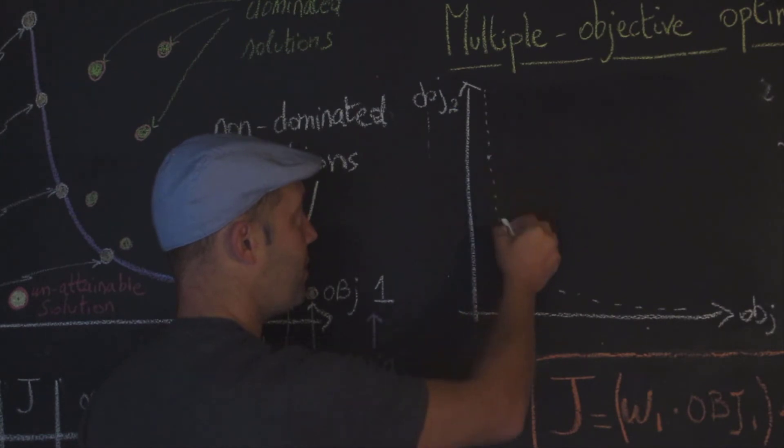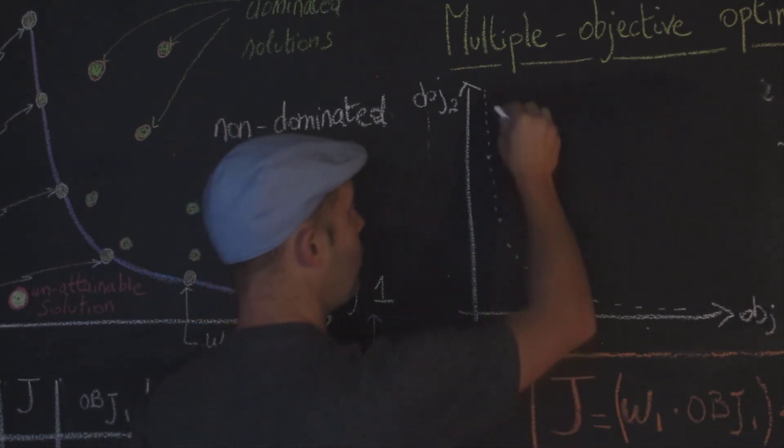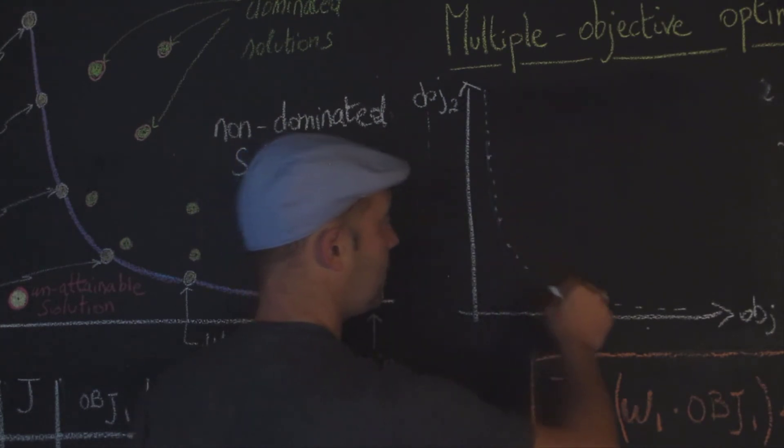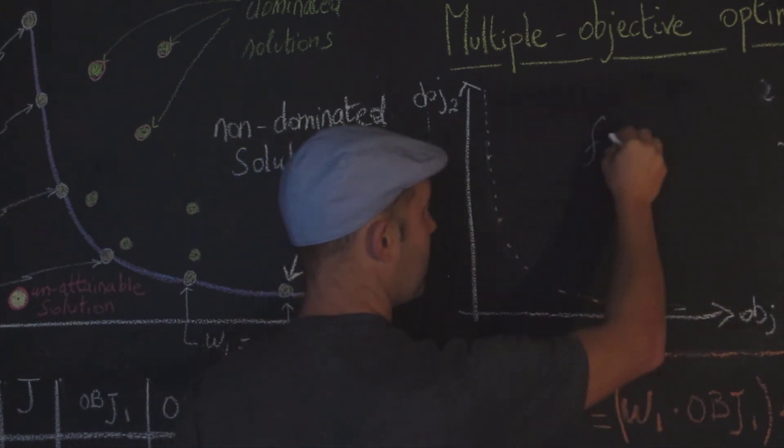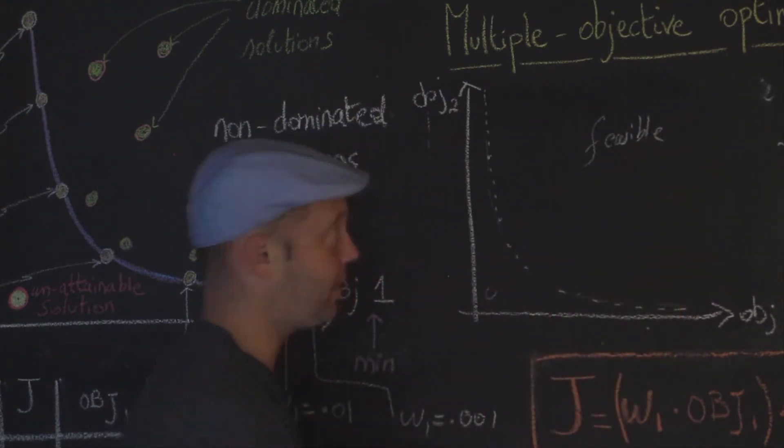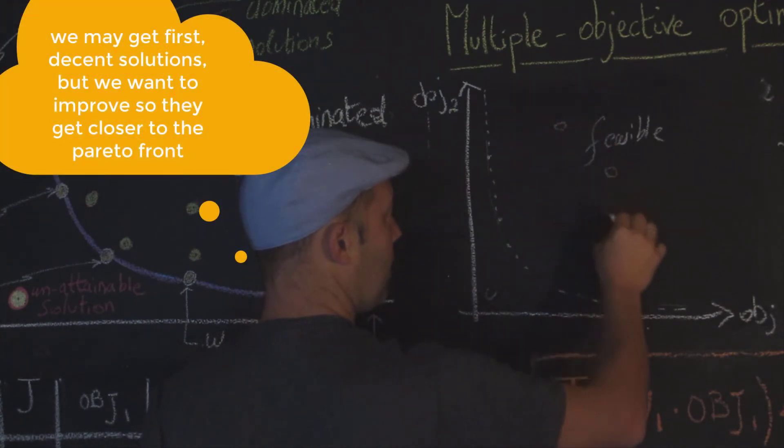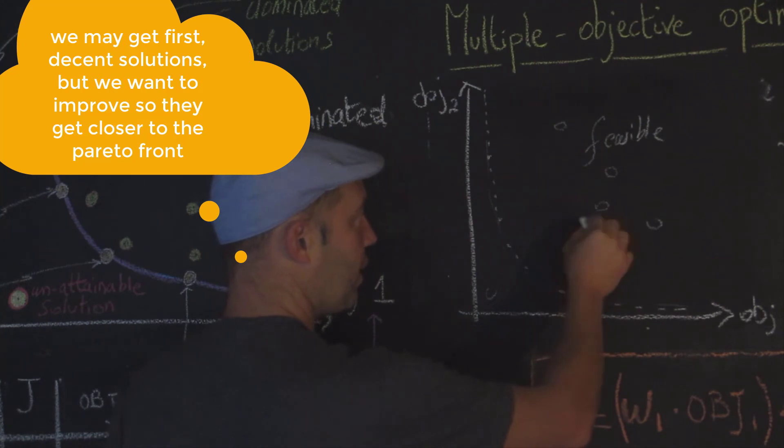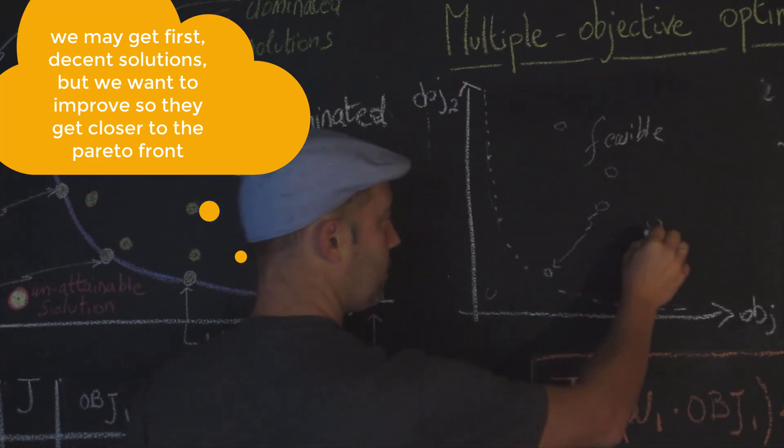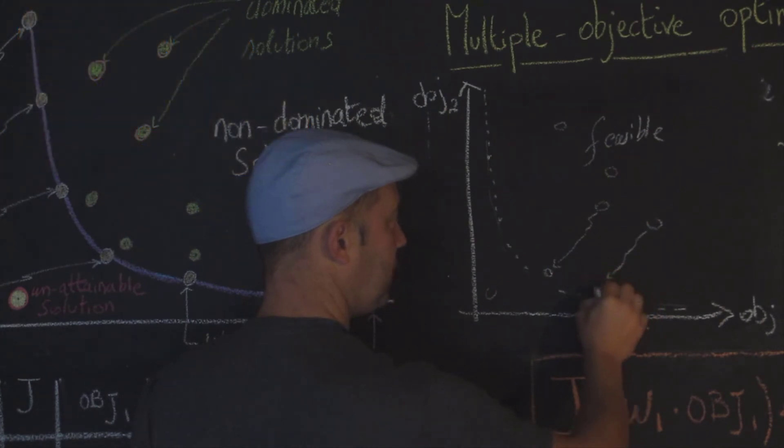So one way to do it is - we do know that all of this here is the feasible space. We do know for instance that this solution here is not feasible, it's not attainable. So we typically gonna get some solutions that are feasible, that are optimal, and gradually we are going to try to improve them so that they will get close to that Pareto front.